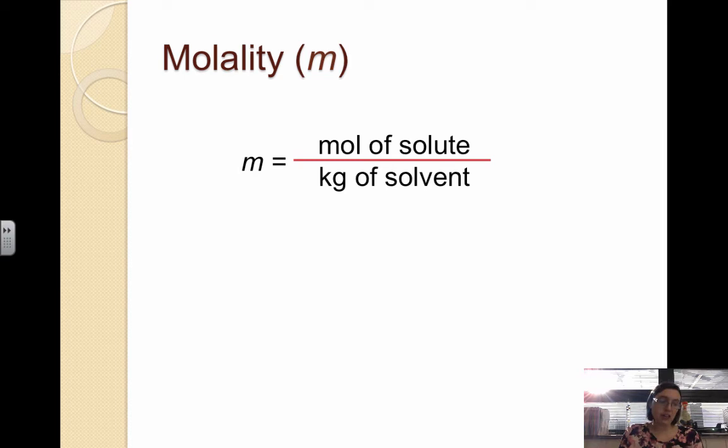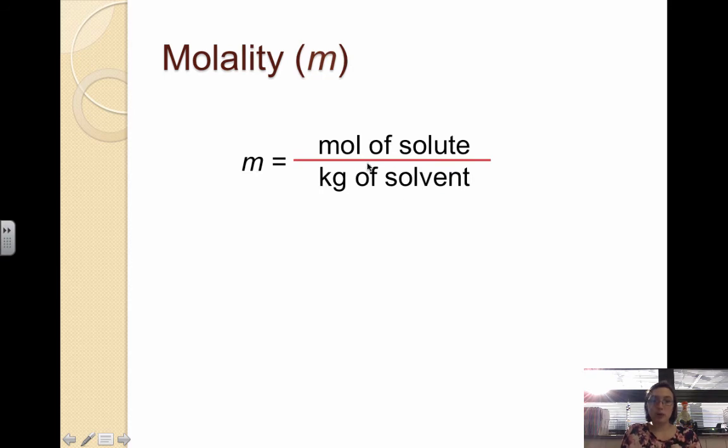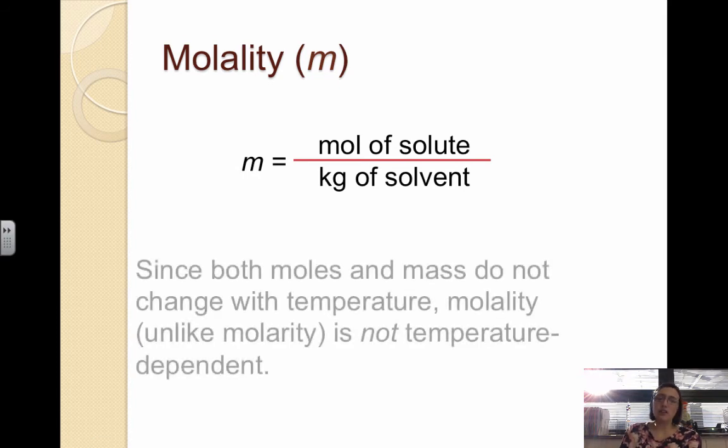Then we have molality. Molality will be used a lot when we look at colligative properties in the next video. The difference between molarity and molality is that molarity depends on the volume of solution. Molarity is liters of solution on the bottom. Molality is dealing with only the solvent - it's dealing with the mass of solvent on the bottom. So to calculate molality, you take the moles of the solute over kilograms of solvent. Notice there's no solution anywhere - solute over solvent.